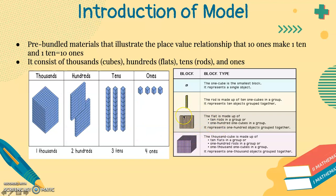The flat is made up of 10 rods in a group or 100 one cubes in a group. It represents 100 objects grouped together.